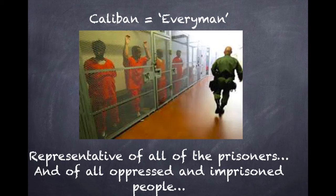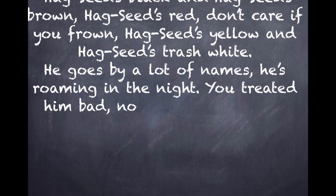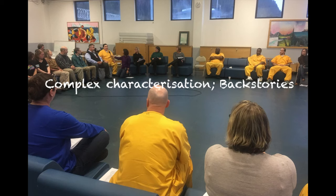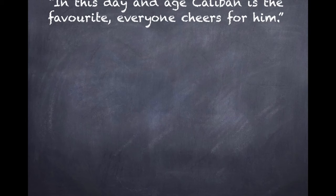Caliban's depiction in the play as the subjugated slave is transformed into a group of prisoners in the novel. No one prisoner is representative of Caliban — Caliban is instead an every-man character, representative of all of them, the collective, and on a wider scale, of all oppressed and imprisoned people. This is most clearly conveyed in the Caliban rap song, which uses second-person pronouns and cumulative adjectives to suggest that Hag-Seed is a product of his treatment by others: 'Now Hag-Seed's black and Hag-Seed's brown. Hag-Seed's red, don't care if you frown. Hag-Seed's yellow and Hag-Seed's trash white. He goes by a lot of names, he's roaming in the night. You treated him bad, now he's a sack full of fright.' The prisoners are a collective representation of Shakespeare's Caliban.